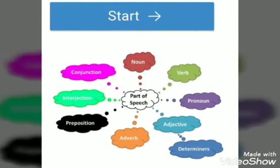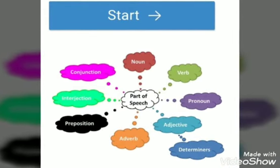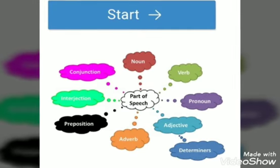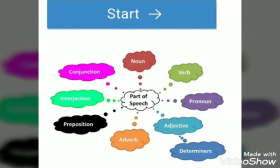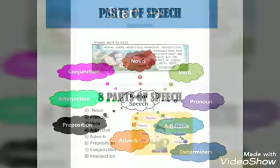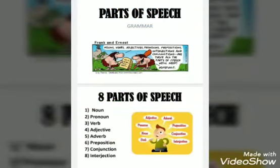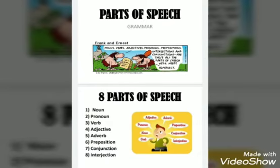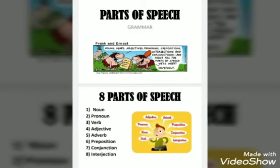Today we will learn about the parts of speech. There are 8 types of parts of speech: noun, pronoun, verb, adjective, adverb, determiner, preposition, and conjunction. And the last one is interjection.